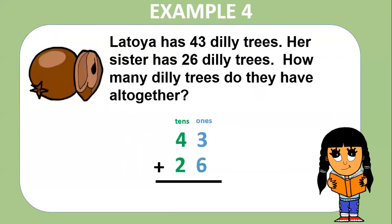Example four. Latoya has 43 dilly trees. Her sister has 26 dilly trees. How many dilly trees do they have altogether? Do you remember the steps? Step one, add the ones. Step two, add the tens. Let's circle 43 and 26. Three plus six equals nine. Four plus two equals six. So the sum is 69.